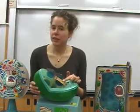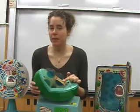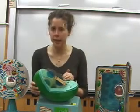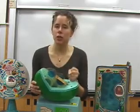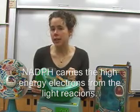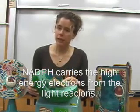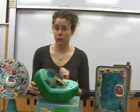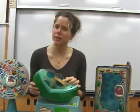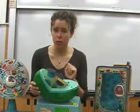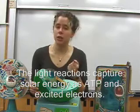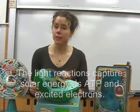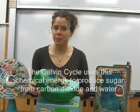Our electron's job is not quite done yet. It might be excited again by another photon of light and carried off in another electron transporter called NADPH. So what we've gotten from this process so far is some ATP and some high energy electrons. While they sound useful to a cell, remember that what we're trying to do here is make sugar — and we don't have anything that looks like sugar yet. We've really only done step one of photosynthesis: the light reactions, converting solar energy into chemical energy.